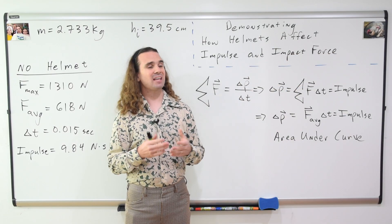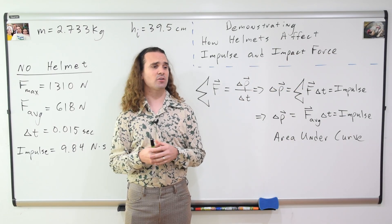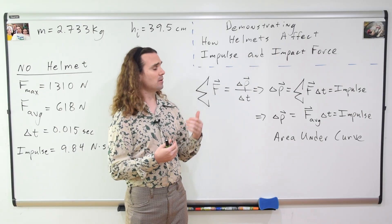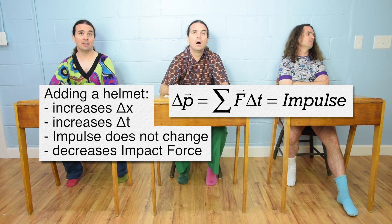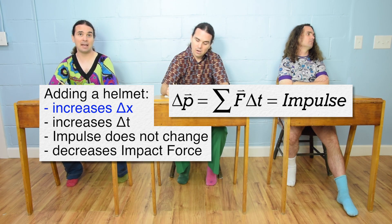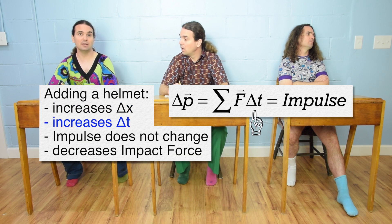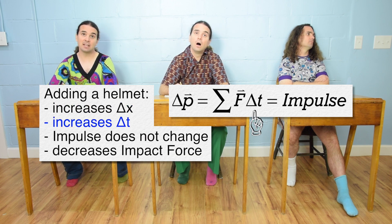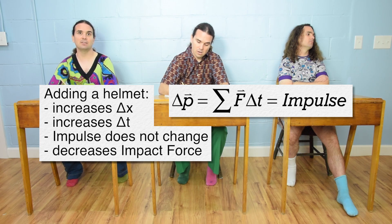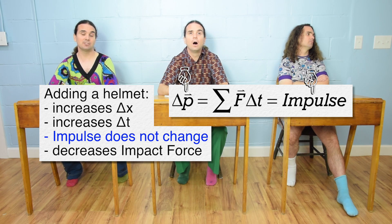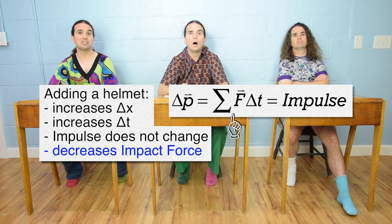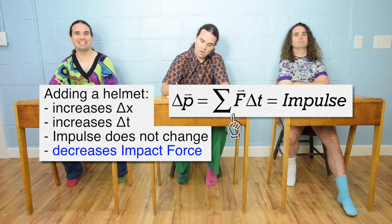And Billy, how does adding a helmet to somebody's head during a collision affect all of the variables in this equation? Adding a helmet increases the distance a human head has to slow down, and therefore it increases the time during the collision. However, it does not change the initial velocity or final velocity or mass of your head. Therefore, the change in momentum or impulse should stay the same. Therefore, the net force or the force of impact during the collision is decreased because the change in time is increased.